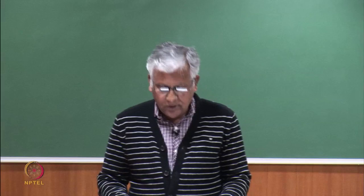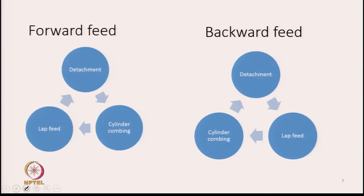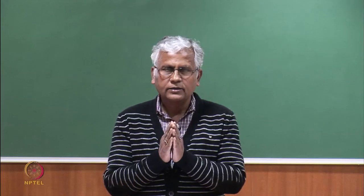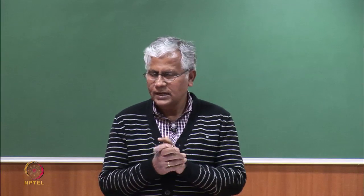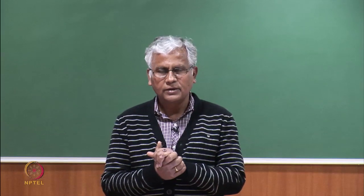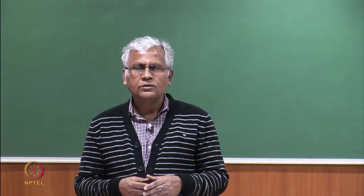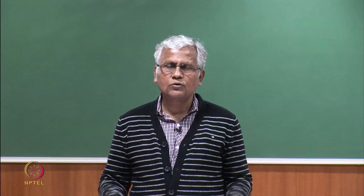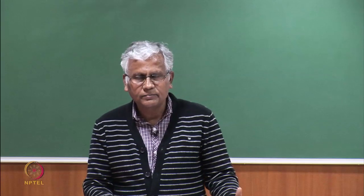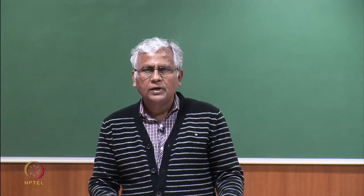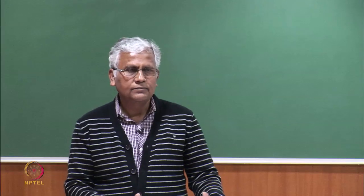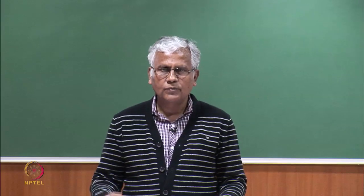Now we move on to another concept called boundary length. Combing is basically a fibre sorting machine — it segregates the fibres, separating long fibres from the shorter ones. That is the basic purpose of the combing machine. The additional advantages are that we open the fibres again, separate them, and can remove some naps and impurities still left in the lap. But the machine has been primarily designed to segregate the fibres into two groups — that is the main purpose.